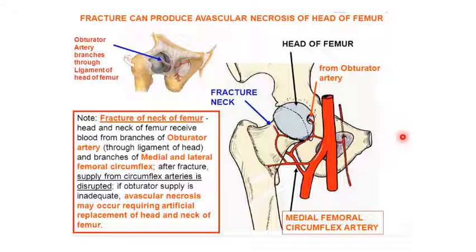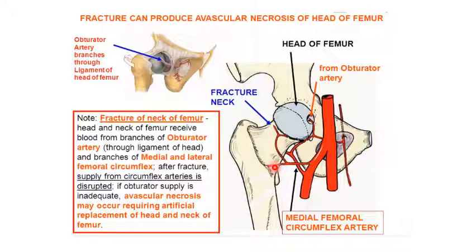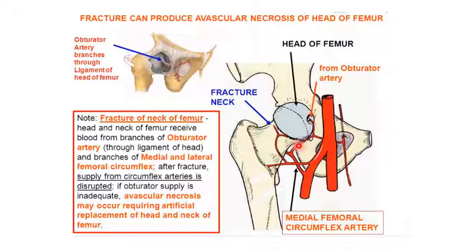Avascular necrosis of the head of the femur can result from a fracture at the neck of the femur. The arterial ring formed by the medial and lateral circumflex femoral arteries is injured, compromising the retinacular branches that enter the capsule to supply the neck and head of the femur. This causes avascular necrosis of the head of the femur, requiring replacement of the femoral head with a prosthesis — a partial replacement of the hip joint.